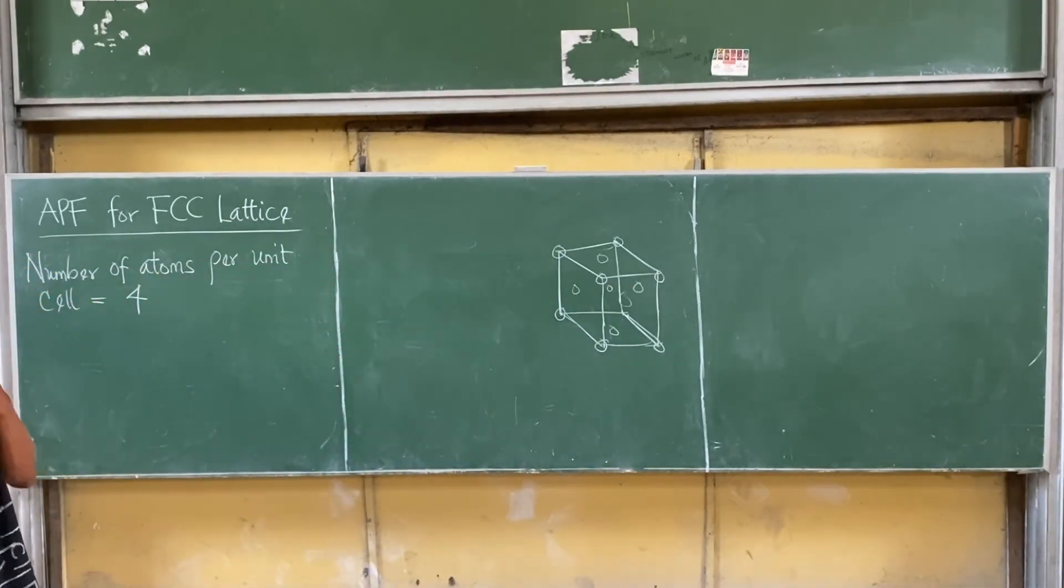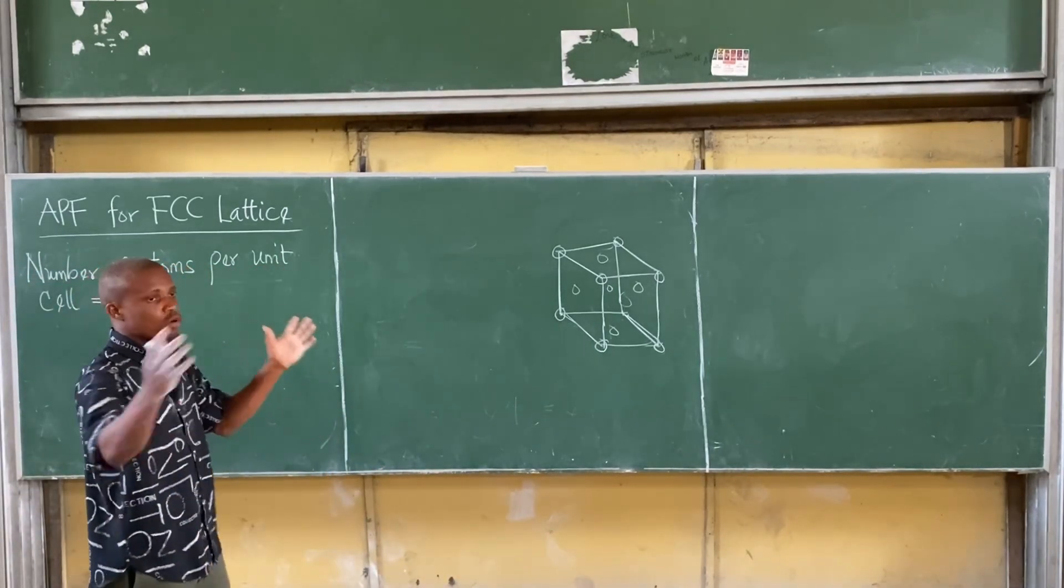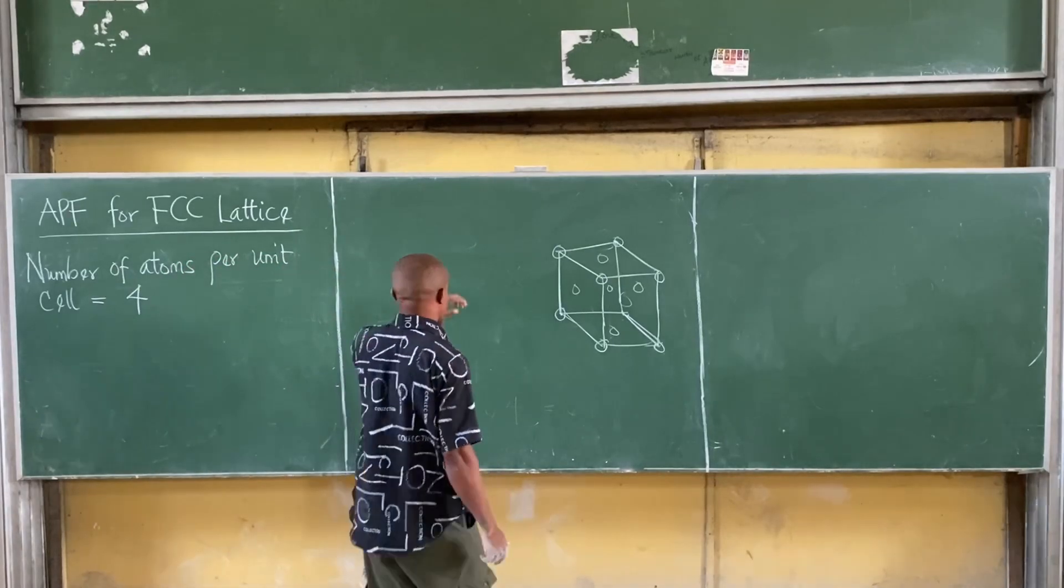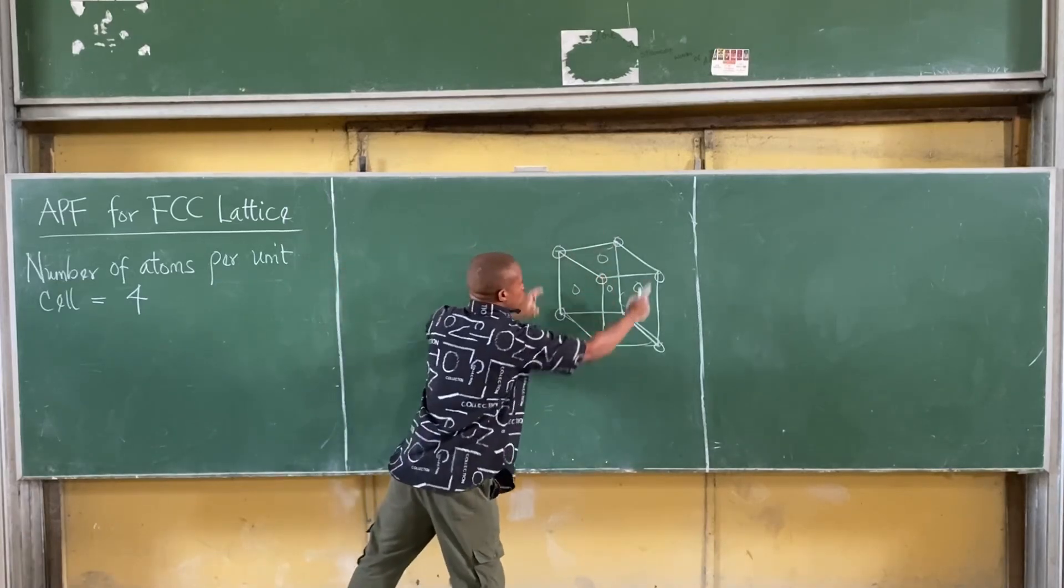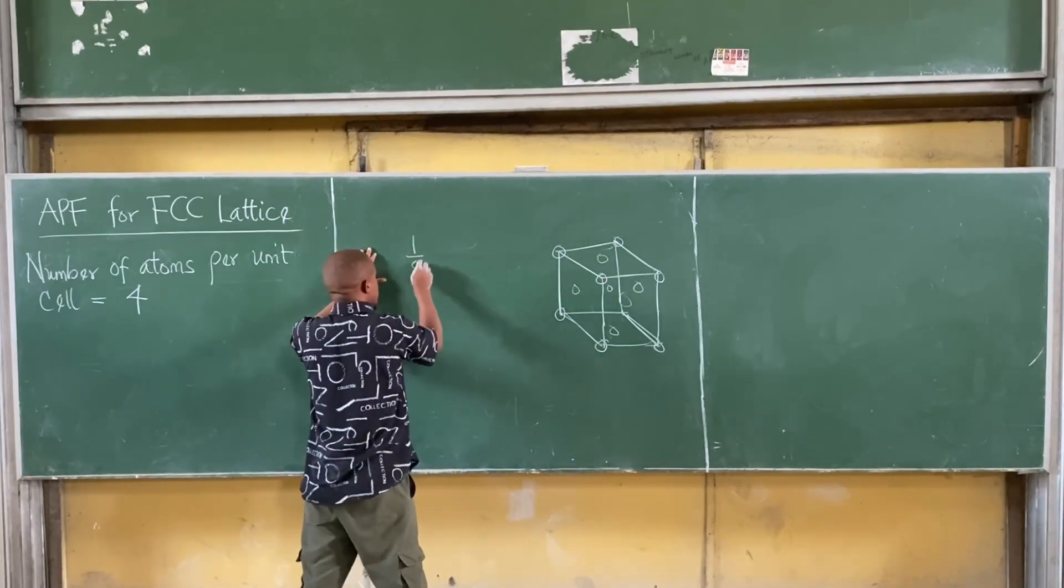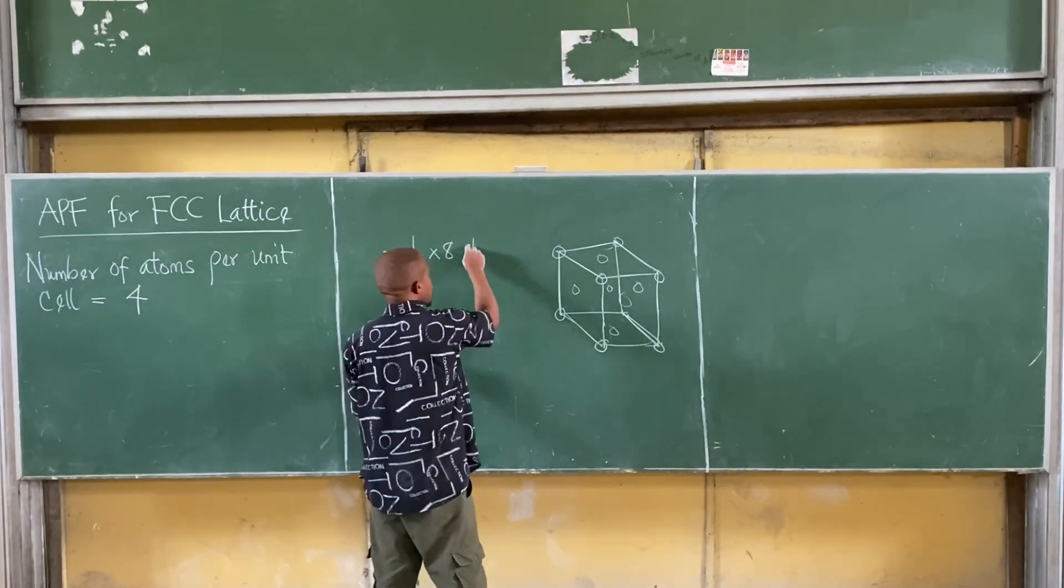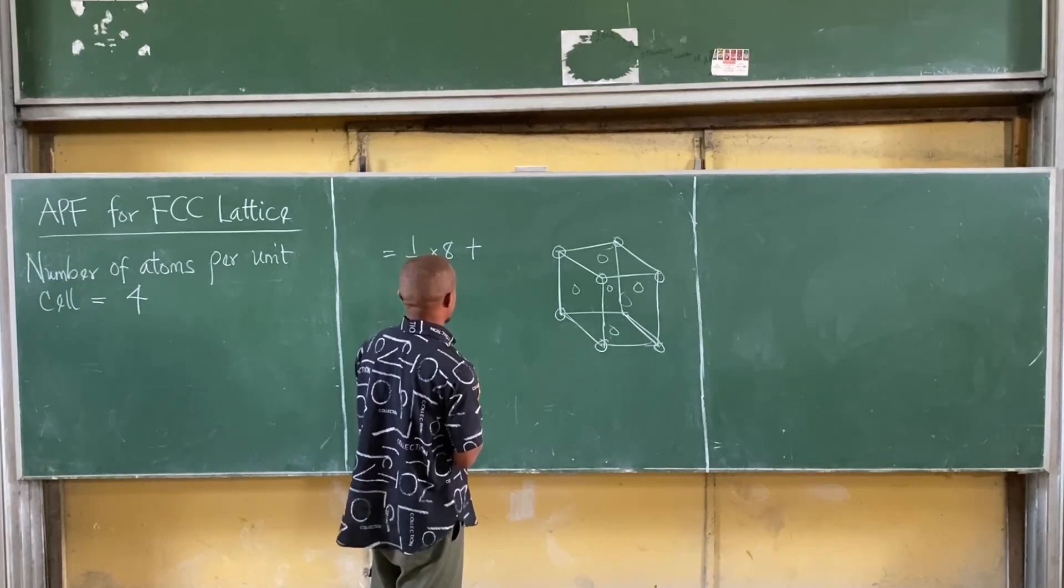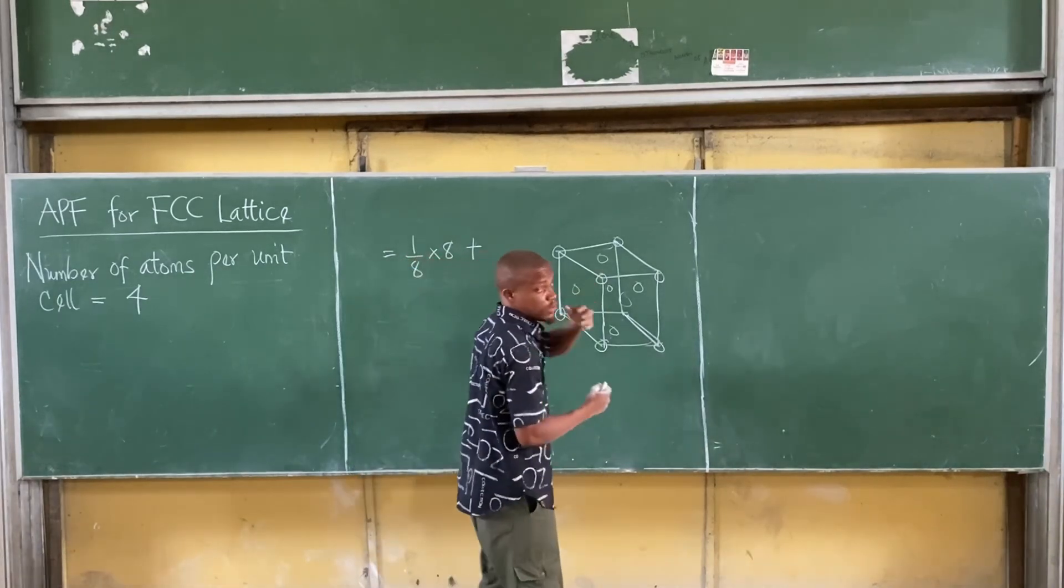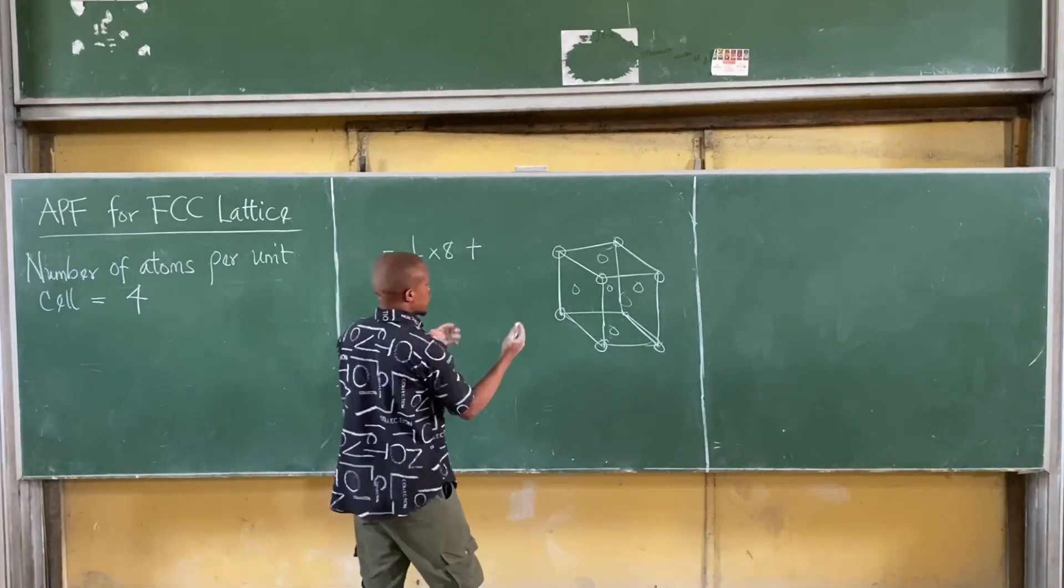So, atoms on each of the corners and on the faces. Now, if we are to form a space lattice, we get that the unit cell will only contribute for the corners. So, that's 1/8 times 8. Plus, for our faces, there are 6 faces. Therefore, there are 6 atoms on that face.